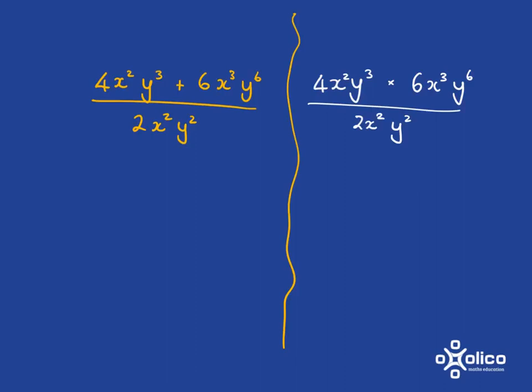One last thing I want to point out is that if we have a look at these two things, although they look quite similar, they're very different. Because here you have a plus at the top, so you've got two separate terms and this thing at the bottom needs to then be distributed to each of those terms.